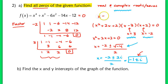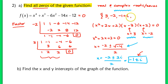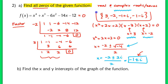Let's list all of them as a solution set. We have a real root at 3, a real one at negative 2, a complex root at negative 1 plus i, and negative 1 minus i. So here would be all of the zeros for our given function.